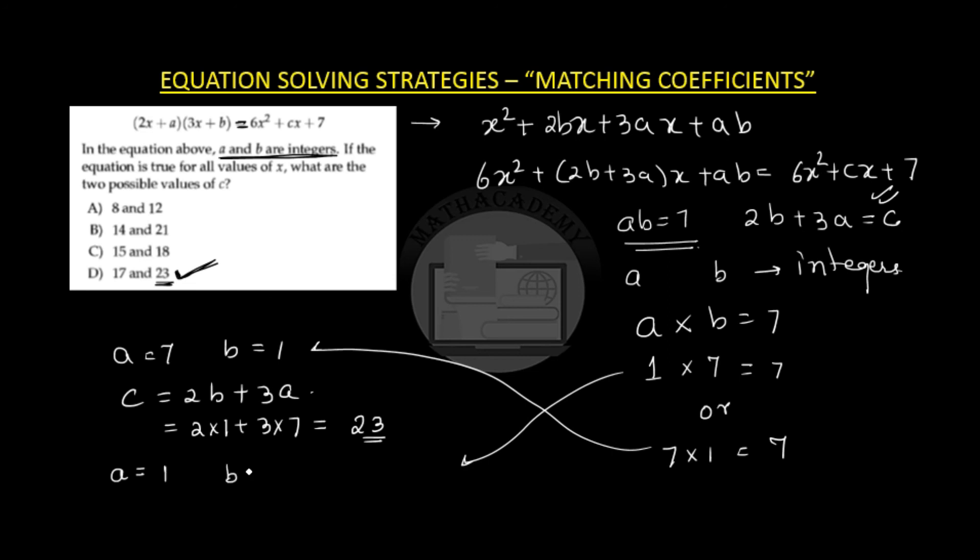So I will take a as 1 and b as 7. So c is equal to 2 times b which is 7 plus 3 times a which gives me a 17 which is same as the another choice which is given in question d.